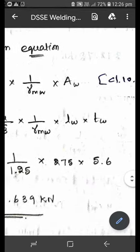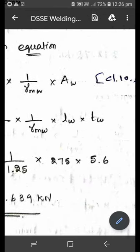Area of the weld is nothing but the effective length into throat thickness. Effective length already we have calculated from the figure as 275 mm. Then tw is the throat thickness, effective throat thickness.